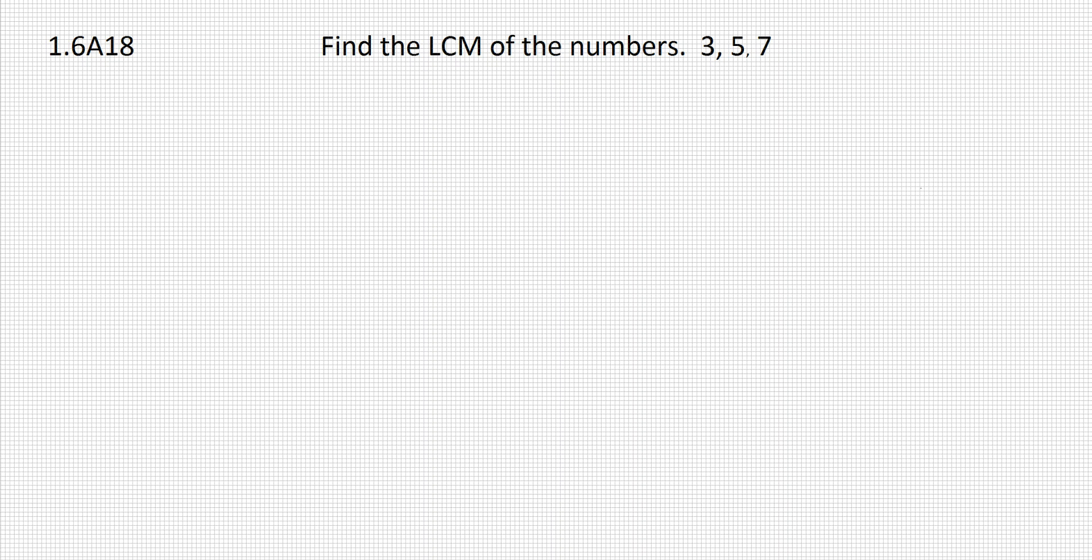Find the least common multiple of the numbers 3, 5, and 7. So we're looking for the least common multiple of 3, 5, and 7, and it doesn't specify that we have to use factorization or the list method.